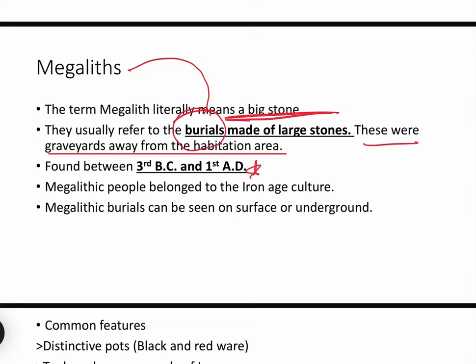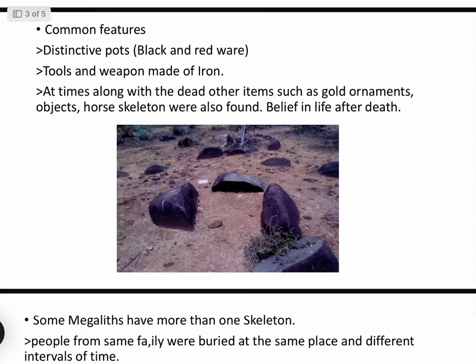Megalithic people belong to the Iron Age culture. When these burial practices started, iron was very commonly used in society, and hence we call it an Iron Age culture. Megalithic burials can be seen both on the surface and underground — it was not just superficial or purely underground. Both types of characters can be seen.